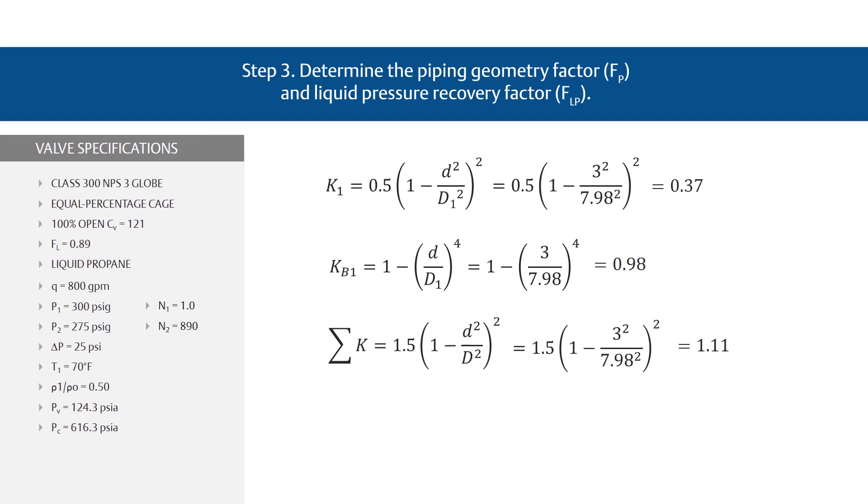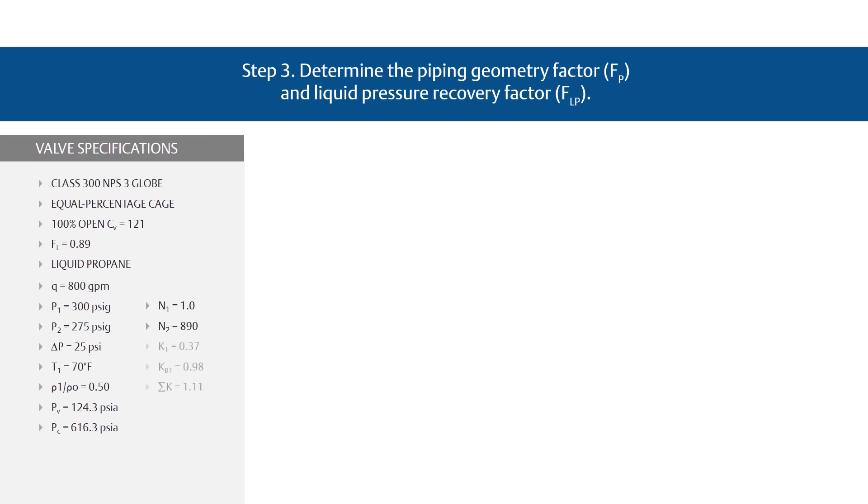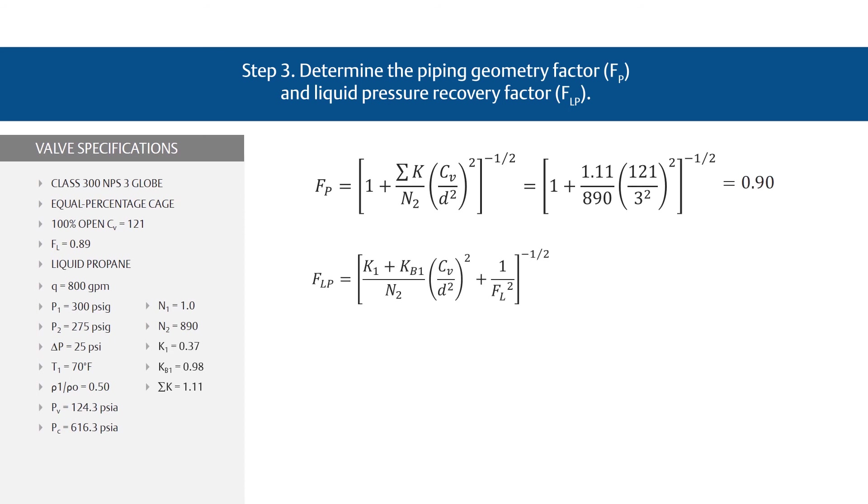Next, let's calculate the piping geometry factor, or F sub P. Use the standard F sub P equation and plug in your variables for a resulting F sub P of 0.90. Then, calculate the liquid pressure recovery factor, or F sub LP. Use the equation and insert your variables to find that F sub LP equals 0.81.